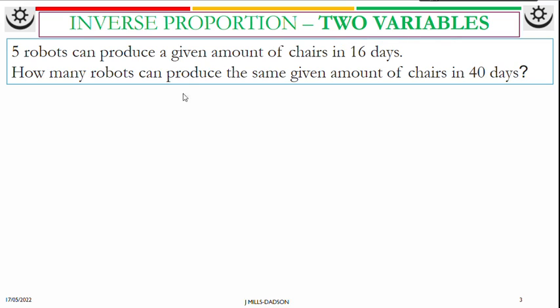Two variables, inverse. Five robots can produce a given amount of chairs in 16 days. How many robots can produce the same given amount of chairs in 40 days?